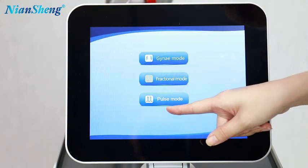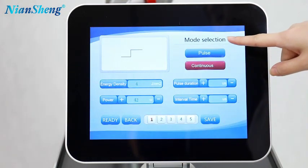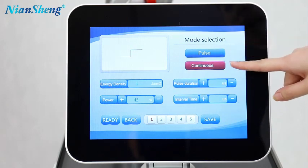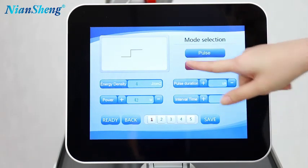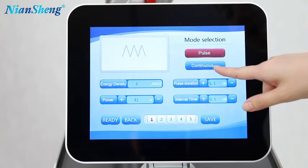And the third function is the pulse mode, which is for the laser cutting. And we can see there are two modes to select. We can select pulse mode and continuous mode. And energy density.